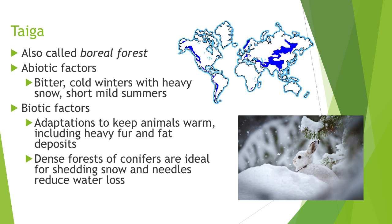The taiga biome can also be called the boreal forest. Abiotic factors include bitter cold winters with heavy snow and short, cool summers. Biotic factors: animals use heavy fur and fat to keep warm. For plants, there are dense forests of conifers — cone-bearing trees — whose cones and needles shed snow easily and also reduce water loss, similar to the needle adaptation in desert plants.